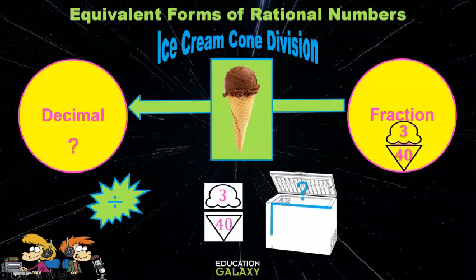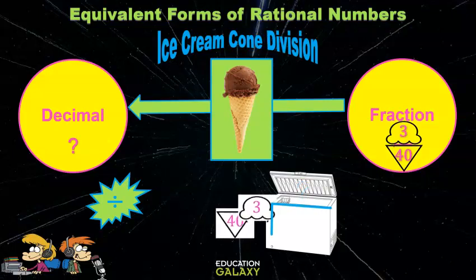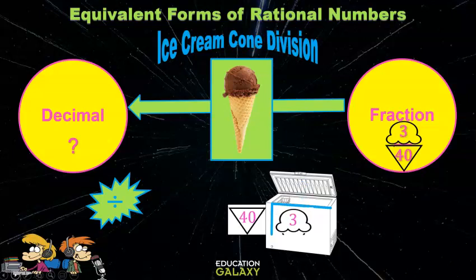Melvin, do you keep ice cream or cones in the freezer? Ice cream. That's right. This is to help you remember that the numerator goes underneath the long division symbol. It's the dividend, and the denominator goes on the outside. It's the divisor.